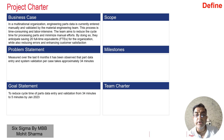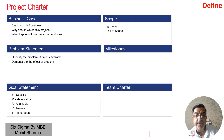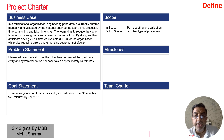The next very important element in a project charter is to define the scope of the project. If you don't define the scope, most projects will have scope creep — meaning your management will keep increasing the scope and you will not be able to finish on time. You should define two things: what is in scope and what is out of scope. In this example, part updating and validation is in scope and all other types of processes are out of scope.